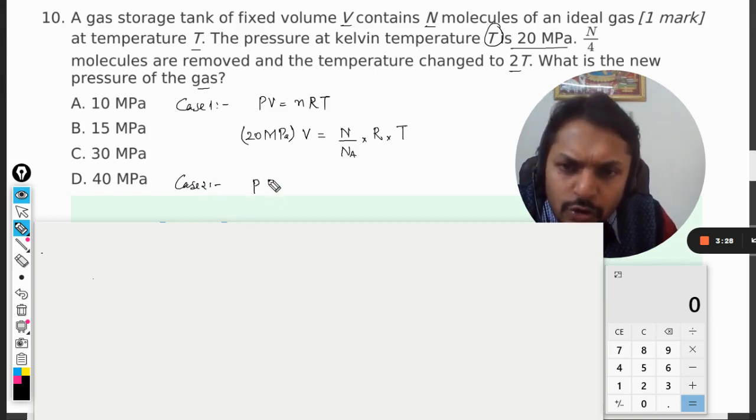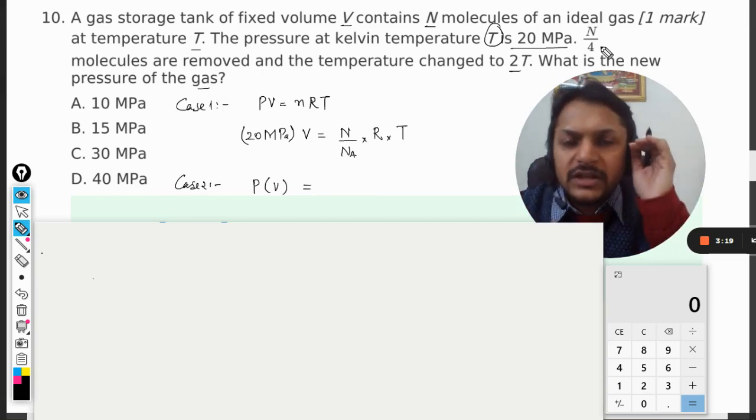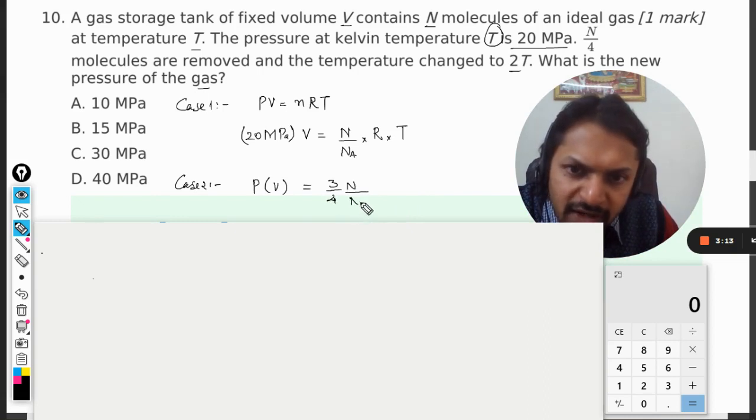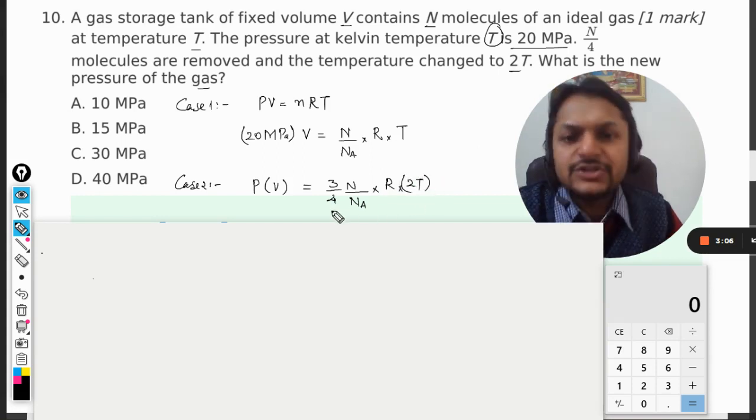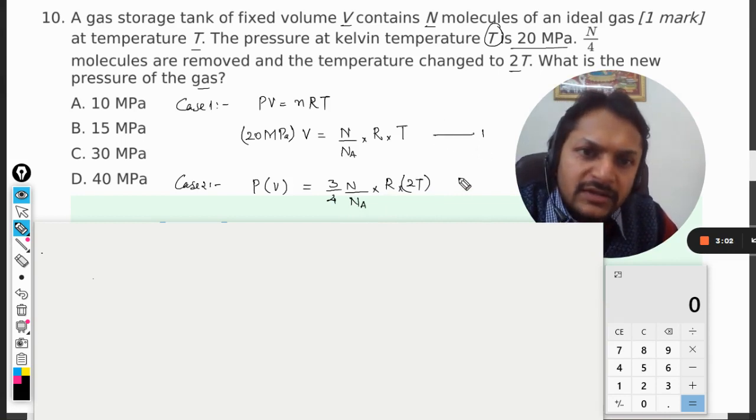Now the second case: pressure we don't know, the volume is kept constant because you can't change the chamber, but the number of molecules have been changed. N/4 has been removed, so 3/4 are left. So it's 3/4 × N divided by NA, times R, times temperature which is now double, that is 2T.